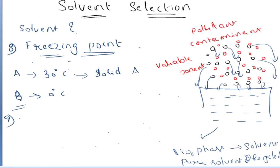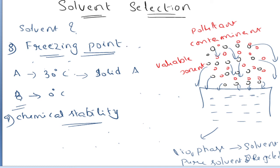The ninth criteria is chemical stability. Your solvent should not be decomposed during storage or during the process. Your solvent should be stable at all temperatures and pressures — whatever the pressure or temperature range used in the separation process. If the solvent decomposes at high temperature or pressure which can occur in a column, then you should not use that solvent because it loses its chemical properties. Your solvent should be stable under the conditions used in the process.